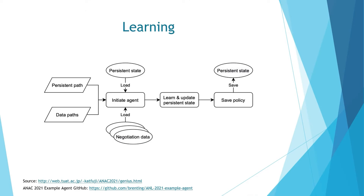In ANAC 2021, agents are also allowed to learn the opponent's behavior during the tournament. In a negotiation session we can learn the behavior of an agent — say its ID is three — and if we negotiate with that party in another session, we can use its past behavior when making decisions. I will not cover the implementation of the learning part in this video; if you want to learn how to implement it, you can check the GitHub repository linked in this slide.